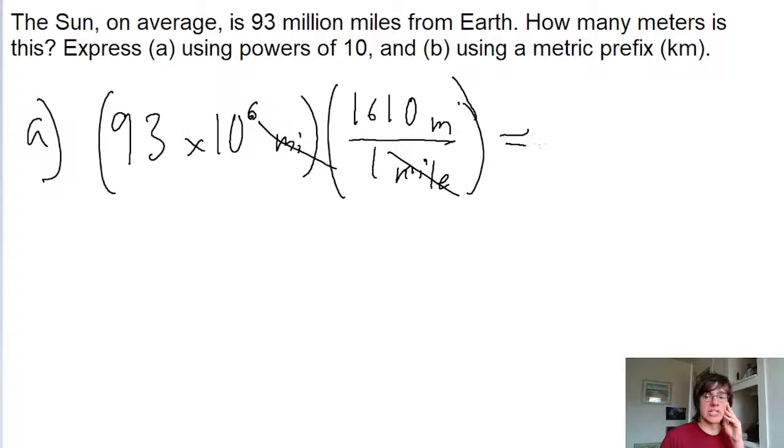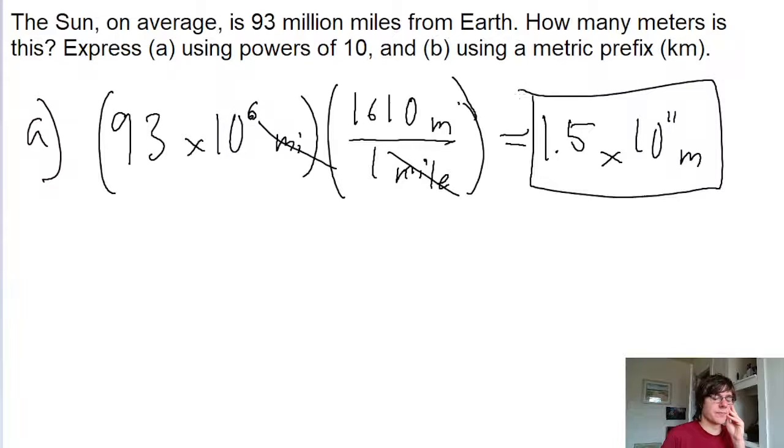and we end up with something in units of meters. So this gives us 1.5 times 10 to the power of 11 meters. That's the distance from the Sun to the Earth in meters.